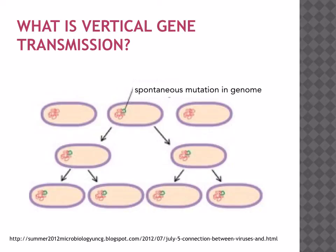The resistant form is selected for, rather than the non-resistant form, when exposed to penicillin. Those penicillin-resistant bacteria therefore gradually dominate the population. The frequency of the allele for penicillin resistance increases in the population.